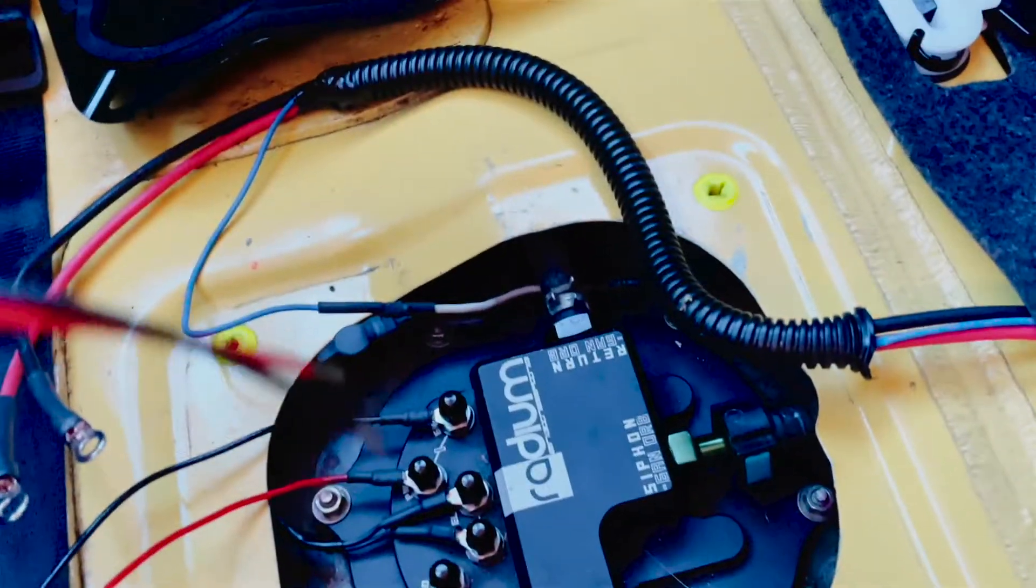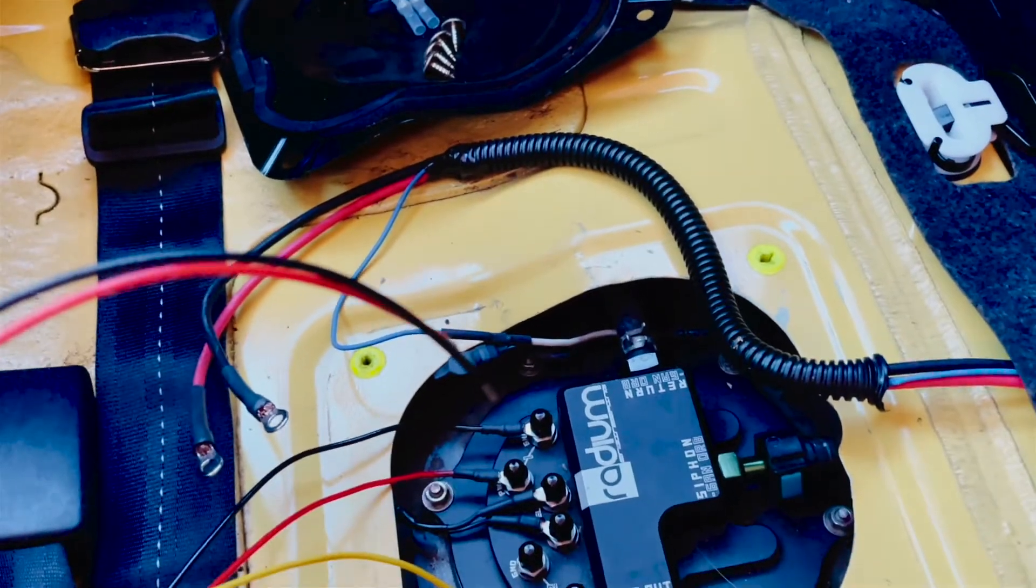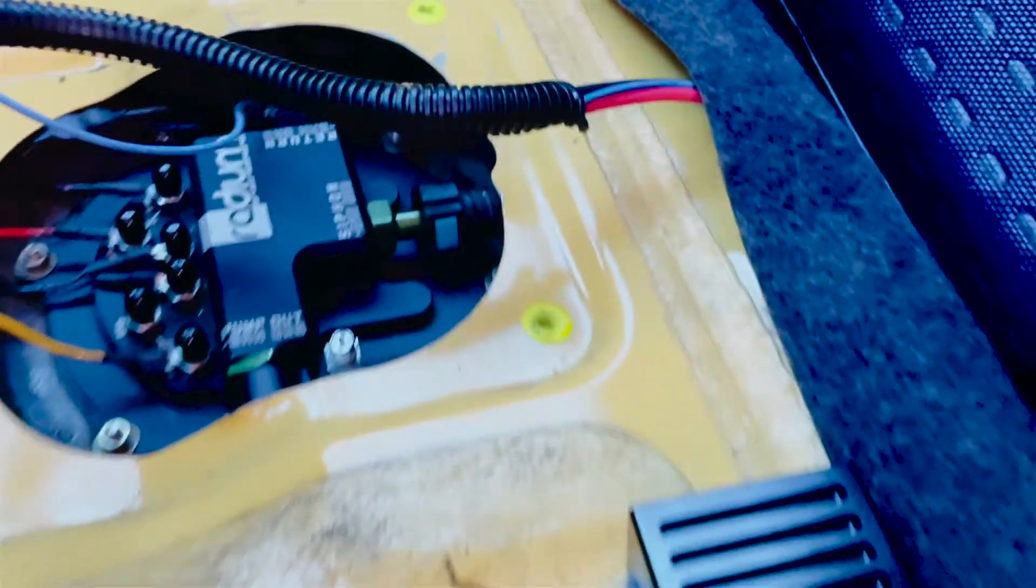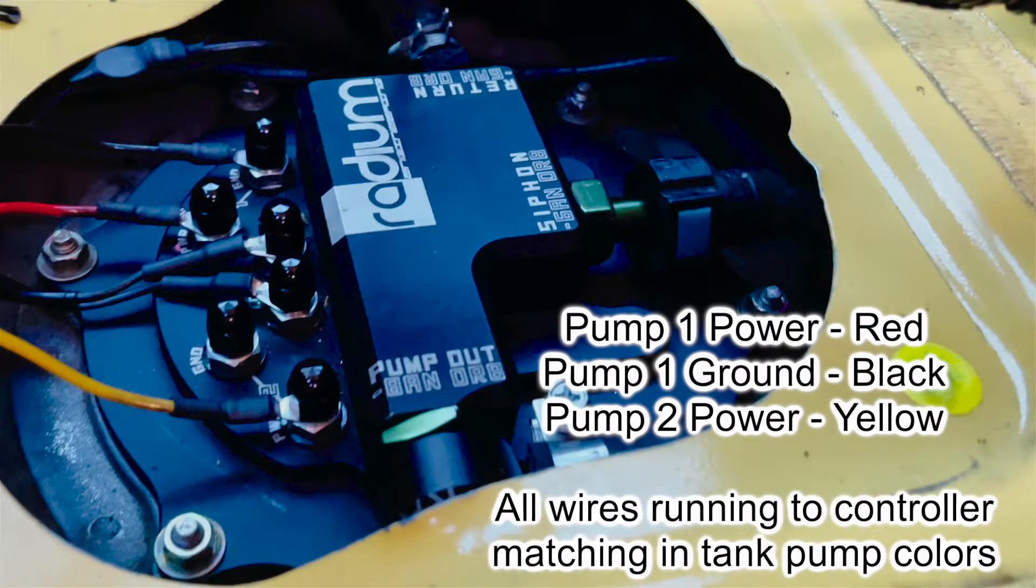Splice in your power and ground cables to your factory wiring. When wiring the controller to your hanger, be sure that the colored wires match the same as they are on the underside of the hanger.